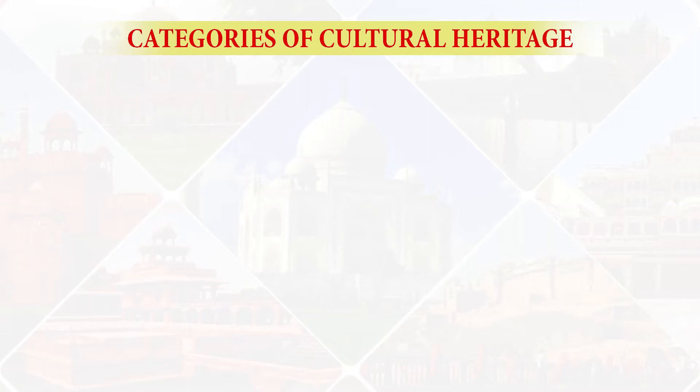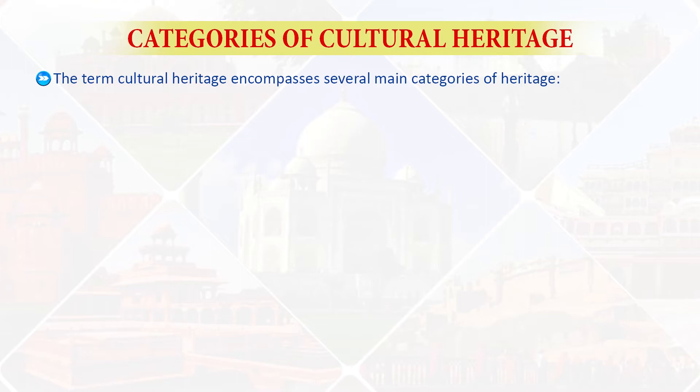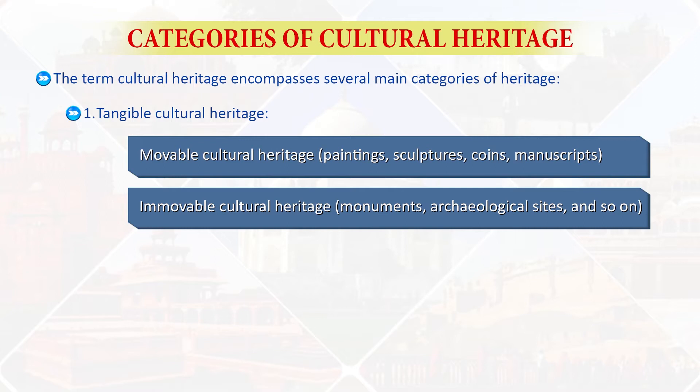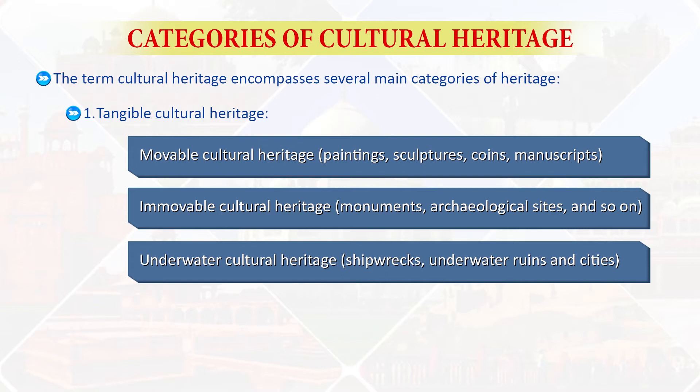Categories of cultural heritage: the term cultural heritage encompasses several main categories. Tangible cultural heritage includes movable cultural heritage such as paintings, sculptures, coins, manuscripts; immovable cultural heritage such as monuments and archaeological sites; and underwater cultural heritage like shipwrecks, underwater ruins and cities.